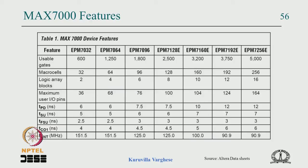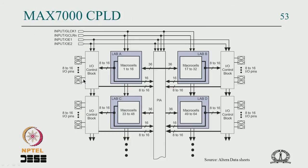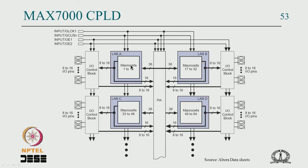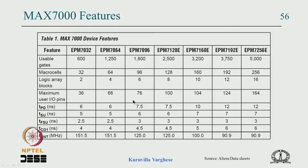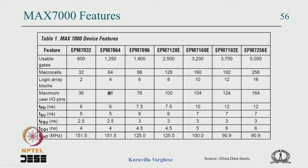The MAX 7000 device family includes EPM7032 (32 macro cells, 2 logic array blocks), EPM7064 (64 macro cells, 4 logic array blocks, 68 pins), up to a device with 16 logic array blocks and 256 macro cells — quite a large device capable of implementing many medium-complexity designs.